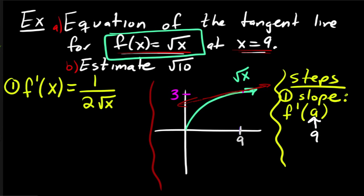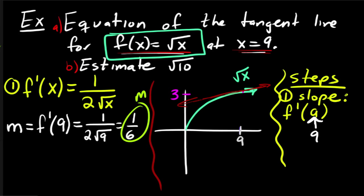Okay, so then the slope, I'm going to call it m, that's the slope, the letter for the slope, y equals mx plus b, is equal to f prime at 9, for the reasons we just talked about over here, and so this is equal to 1 over 2 times the square root of 9, which is 1 over 6. So this guy right here, this is the slope.